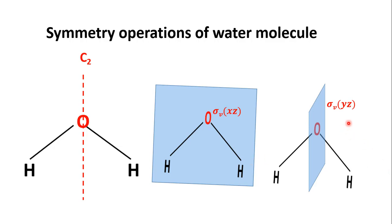In the case of σVyz, it cuts through the oxygen atom and is perpendicular to the molecular plane. It bisects the two OH bonds. During reflection about this plane, the hydrogen atom on the left gets shifted to the right and the hydrogen atom on the right gets shifted to the left.